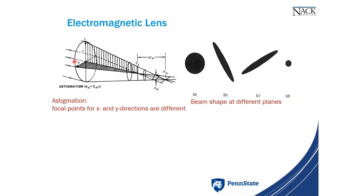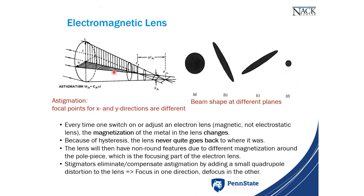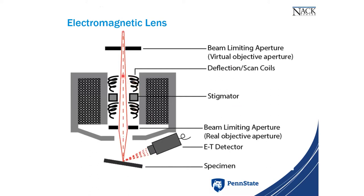Another problem: the magnets are not perfectly symmetric, so we can't focus equally in X and Y simultaneously. Instead of circular beam spots, we get ellipses — X is focused but Y is not. To counteract this, we use a stigmator, which applies corrective fields. I'll demonstrate using the stigmator when I operate the SEM to get a nice circular beam focusing in both X and Y.